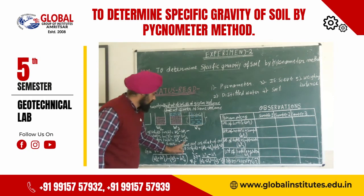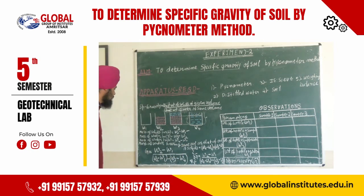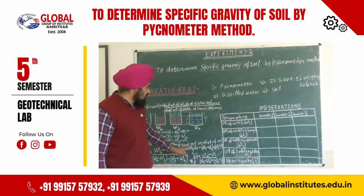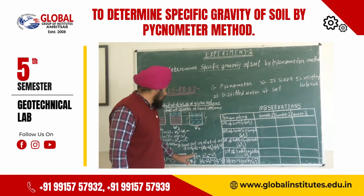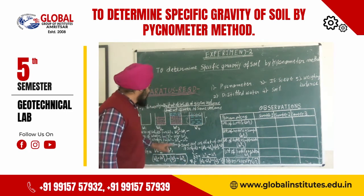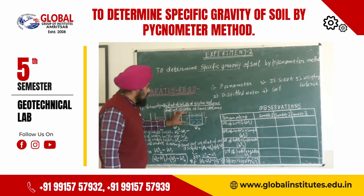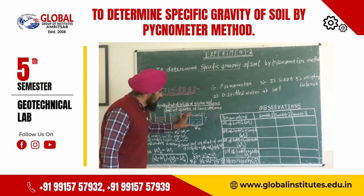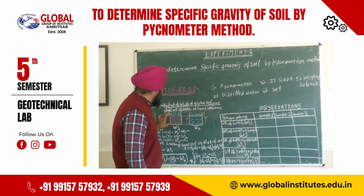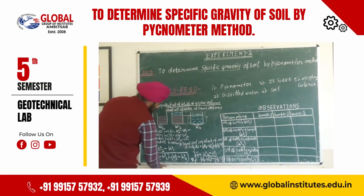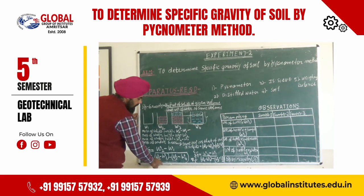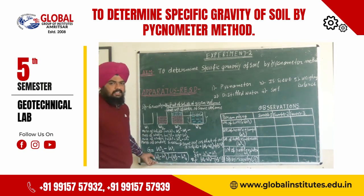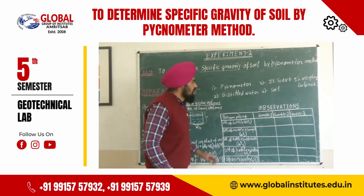Next, the mass of water having the same volume as the volume of solids is calculated. We measure only that portion of volume equivalent to the mass of soil. The formula incorporates W2 minus W1, and the complete specific gravity formula is derived from these four weights.